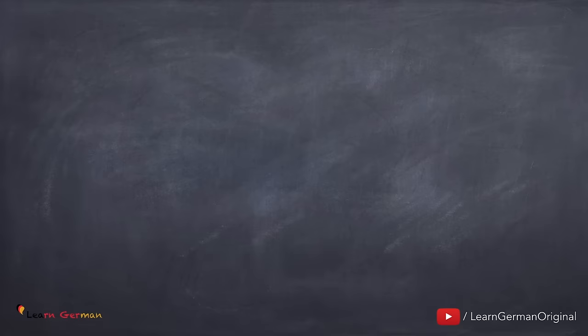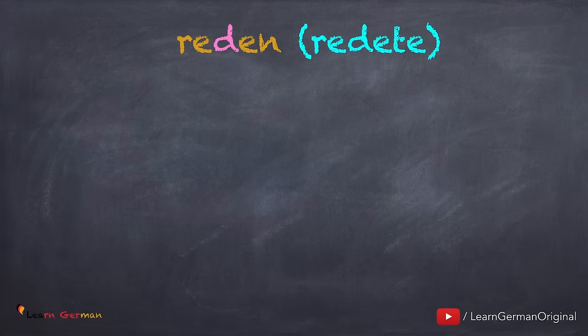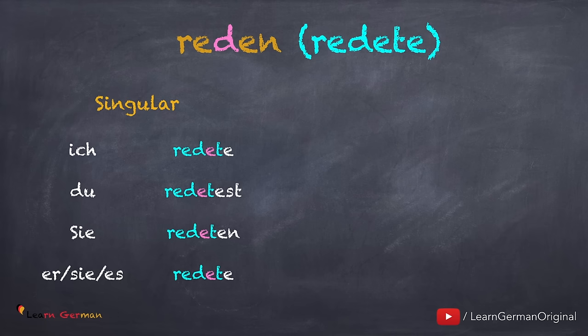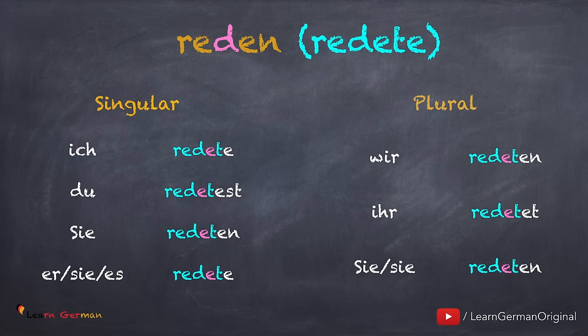Hier ist noch ein Verb, wo der Verbstamm mit d endet. Reden — redete. Ich redete. Du redetest. Sie redeten. Er, sie, es redete. Wir redeten. Ihr redetet. Sie, sie redeten. Und die Konjugation für erste Person ich und dritte Person er, sie, es ist gleich.